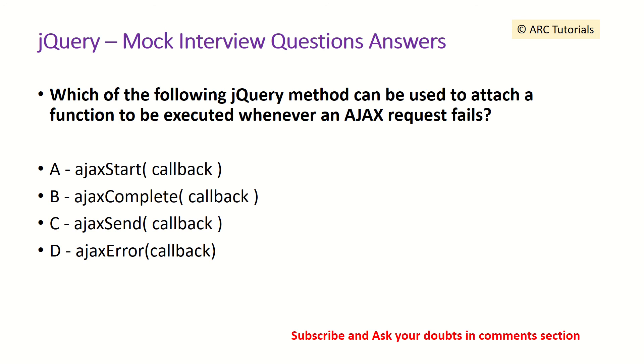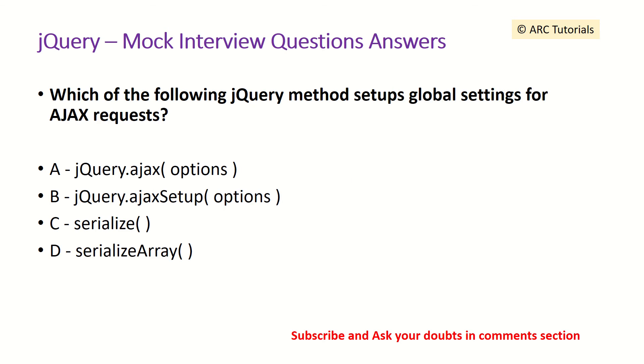So here it's simple. I told you the answer lies in the question. So it's ajaxError callback. This is the method it would call whenever an AJAX request fails. Which of the following jQuery method sets up global settings for AJAX requests?